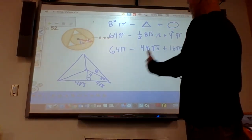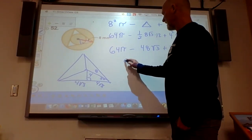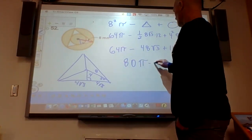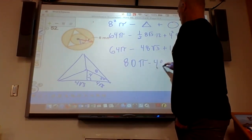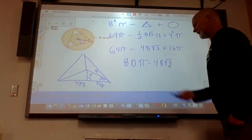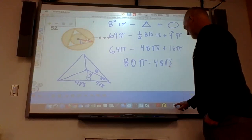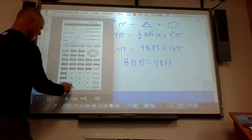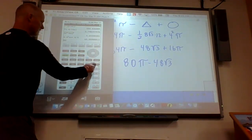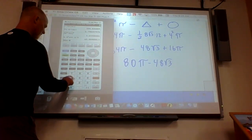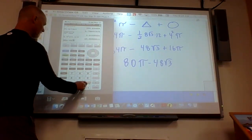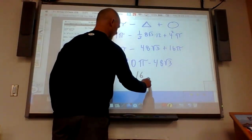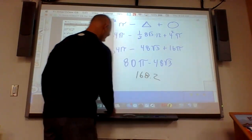We can probably make it a little easier just by making it 80 pi, adding the 16 and the 64 minus 48 radical 3. Now, if I was asking for an exact answer, this would be the answer. If I asked you to calculate it, then you would need to calculate it with your calculator, and it would just be as simple as 80 times pi minus 48 square root of 3. And then we would get 168. So there's your answer, and that is the answer that it gives you.